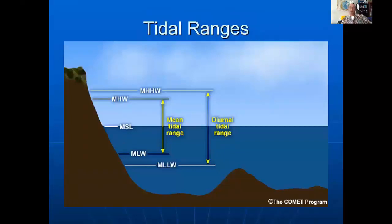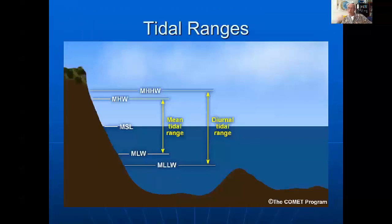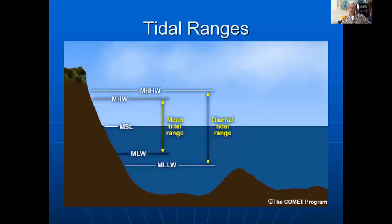To get the tidal height range, we can measure the vertical distance between mean higher high water and mean lower low water to get a diurnal tide range. Or we can get a mean tide range if we're just interested in MHW to MLW. These seemingly subtle variations can make a huge amount of difference.